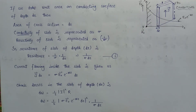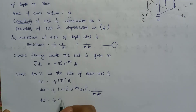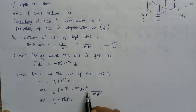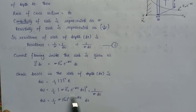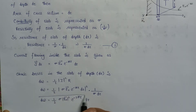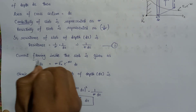Simplifying this expression: dw equals one-half times sigma times E0 squared times e to the power minus 2 gamma z times dz. The sigma in the numerator cancels with the sigma in the denominator, leaving only a single power of conductivity. This is the expression for the ohmic losses in the conducting slab.